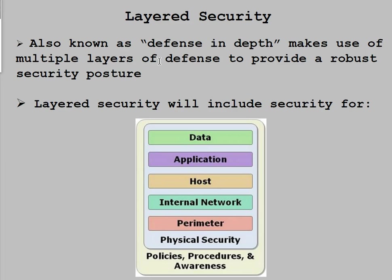For example, on the data layer, what would be a technical access control that could be used to protect your data? You can encrypt the data itself. What other types of things could you do to data in order to protect it? Hashing — so we can check the integrity of the data to make sure that if somebody has manipulated it, we can identify that that's been an issue.